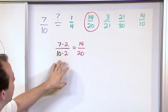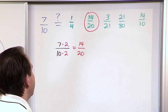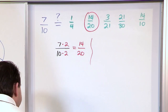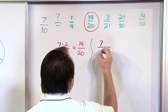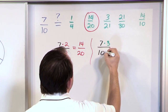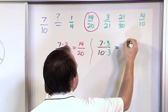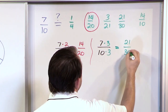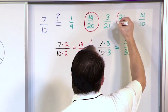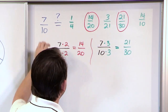Now that we've figured out that multiplying 7 tenths times 2 on the top and bottom gives us 14 twentieths, let's see if any of the other fractions can also be equivalent. Let's take 7 tenths and multiply it by 3 over 3, just to see if anything else fits. 7 times 3 is 21, and 10 times 3 is 30. We look and see right away that 21 over 30 is listed there as well. So 21 over 30 is also the same thing as 7 tenths.